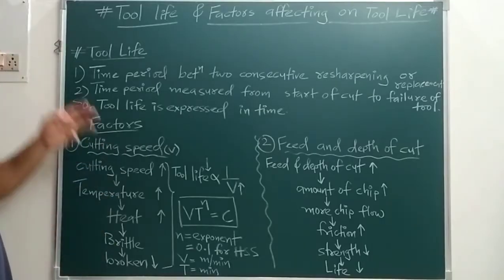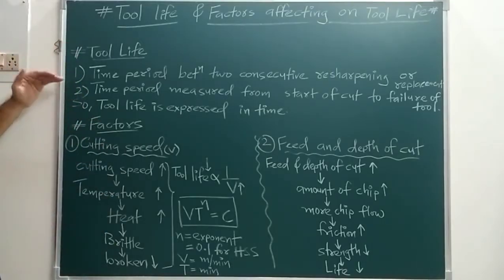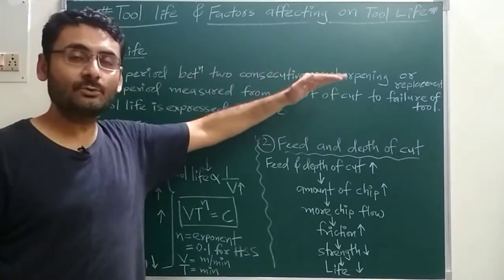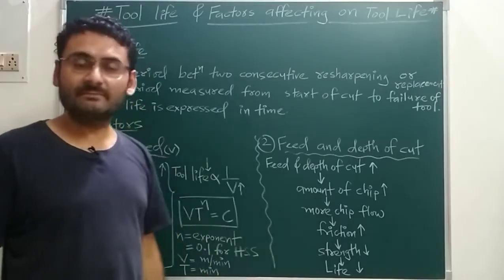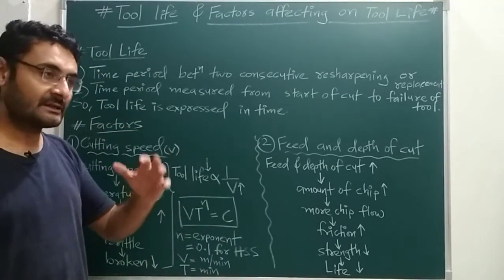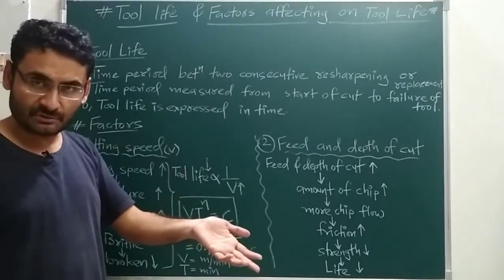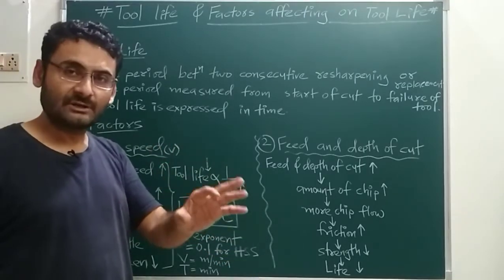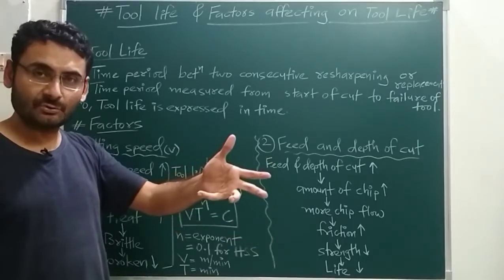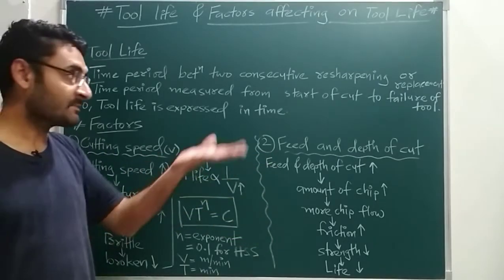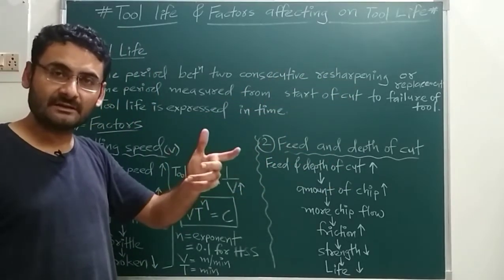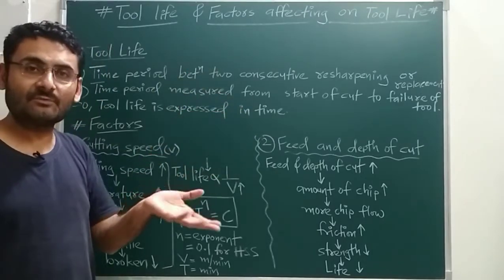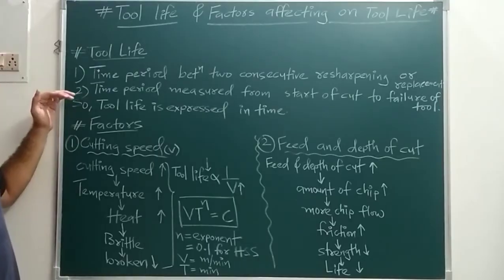Tool life has basically two definitions. The first definition is that tool life is a time period between two consecutive resharpening or replacement. For example, suppose after five hours you replace your tool due to some problem — the tool has been broken. So after five hours if you replace your tool, that means the tool life is five hours. Similarly, if after one hour you sharpen your tool on the grinding wheel, then the time period of the tool is one hour.